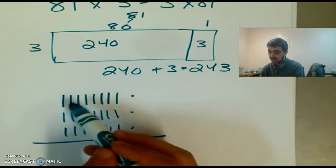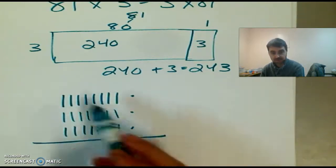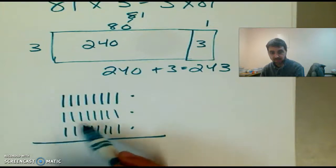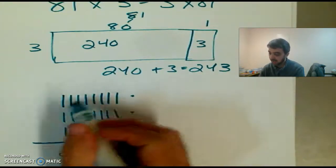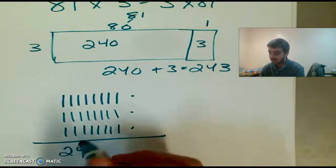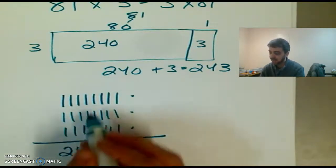Alright, so here you can see I have 8 three times. Right? 8 three times, so that's 24. I have 24 tens. But they're tens, so we have to add a 0. Right? So I have 240.